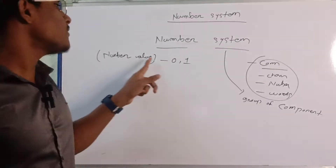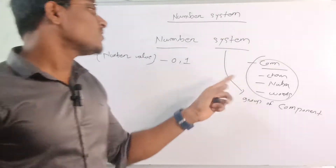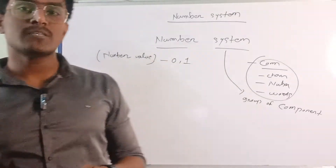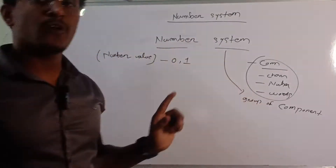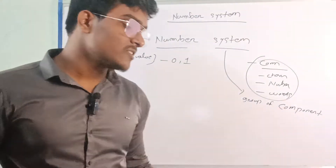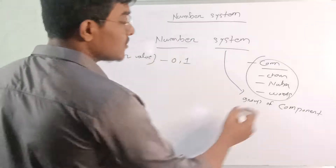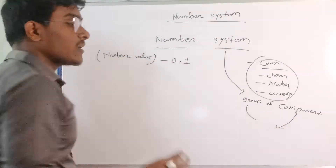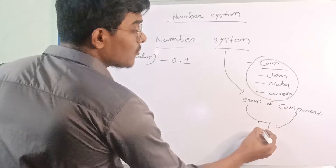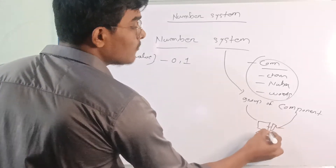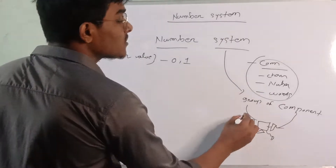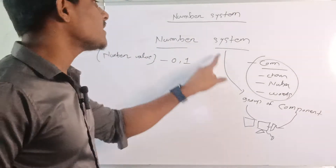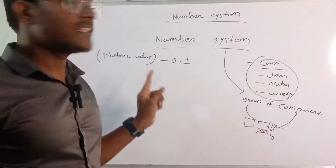So from that, we can say "number" refers to numerical value. In "system" — what happens in a system is a group of components. When someone has a group of components with interconnections, that is a system. For example, a computer where a group of components is connected through interconnections — hardware, software, peripherals — there are interconnections in all devices. So number system combines numerical value with a system of group components.